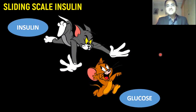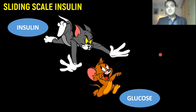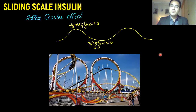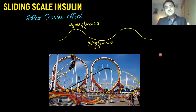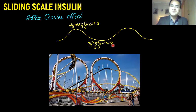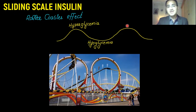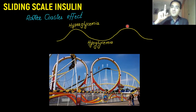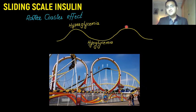What we are trying to do in sliding scale insulin is that we are chasing glucose levels with changing insulin. This leads to an effect called the roller coaster effect. What happens is that sometimes we increase the insulin dose and patients develop hypoglycemia, and sometimes we reduce the insulin dose and patients develop hyperglycemia. So the patient is actually swinging between hypoglycemia and hyperglycemia — that's the bad thing about sliding scale insulin.